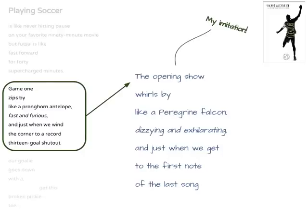Now the second stanza. Our mentor text reads: 'Game one zips by like a pronghorn antelope, fast and furious, and just when we wind the corner to a record 13-goal shutout.' My imitation is: 'The opening show whirls by like a peregrine falcon, dizzying and exhilarating, and just when we get to the first note of the last song.' I wanted to keep similar phrases and line structures that changed the pace and created suspense, such as 'and just when we get.'